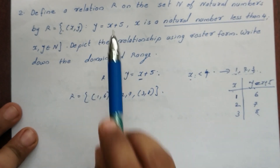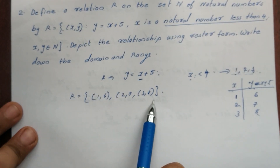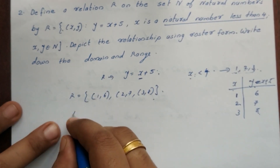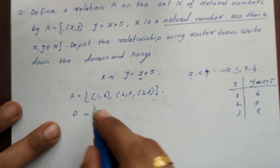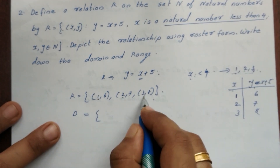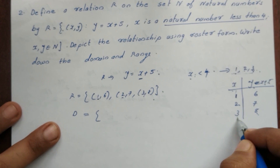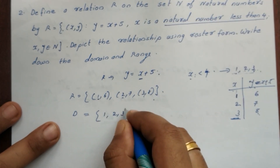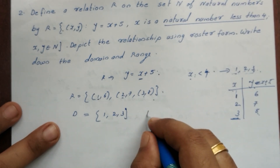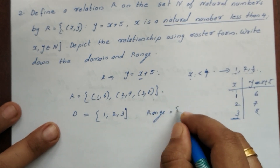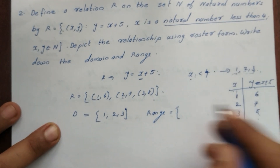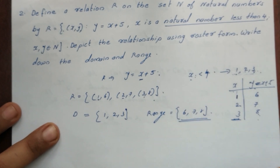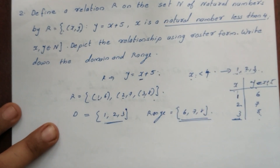So the relation y = x + 5 in roster form is {(1,6), (2,7), (3,8)}. The domain is the set of first elements (input values): {1, 2, 3}. The range is the set of second elements (output values): {6, 7, 8}.